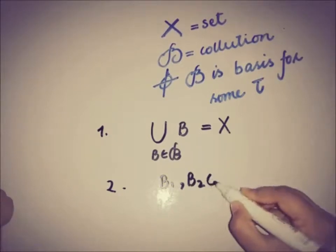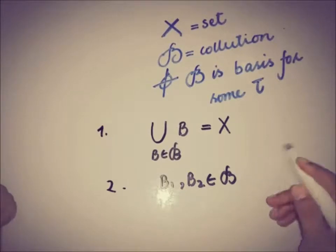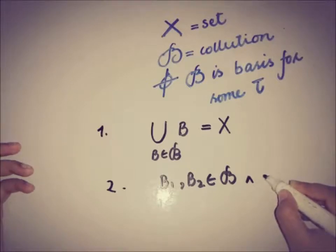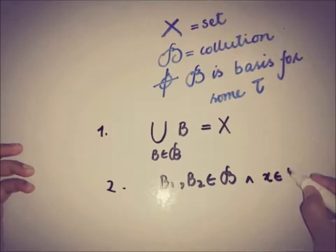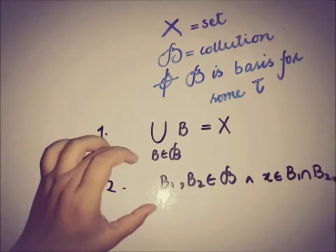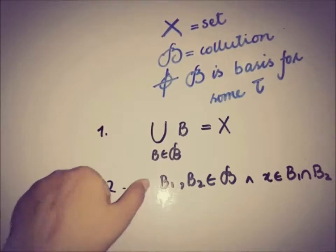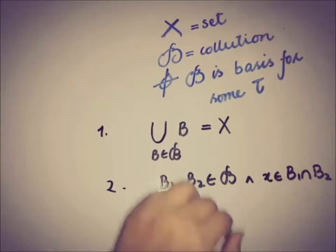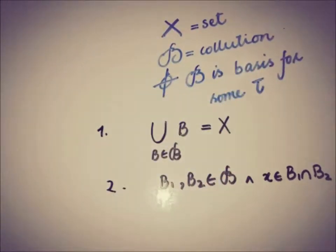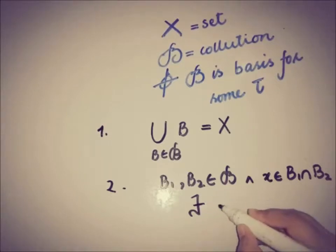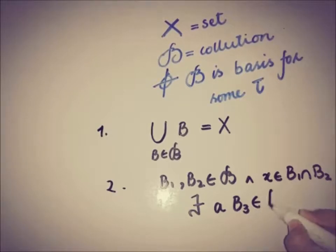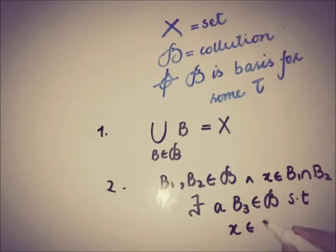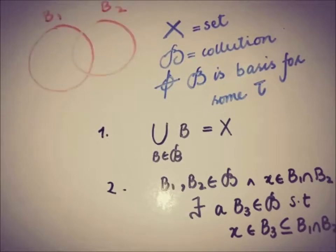The second condition is: for every pair B1 and B2 taken from the collection, and for every x that belongs to B1 intersection B2, there must exist a B3 — an element from the collection — such that x belongs to B3, and B3 is a subset of B1 intersection B2.